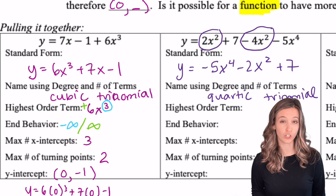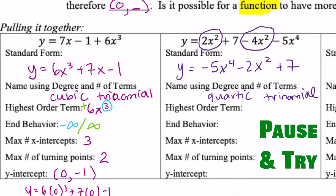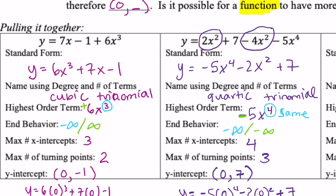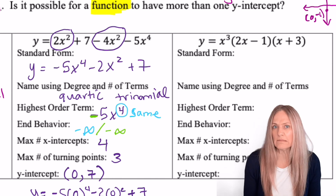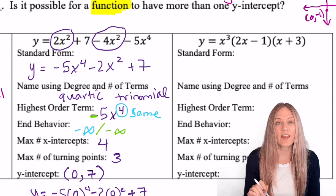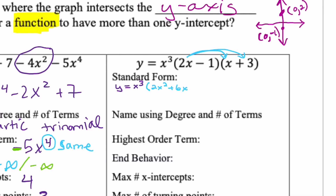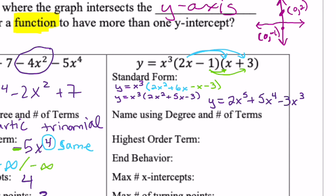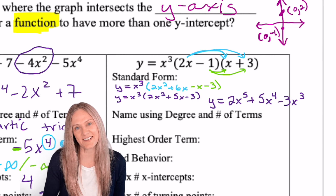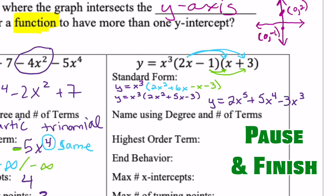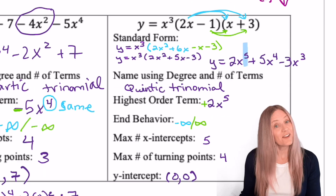Take a moment to try the next one — make sure you start in correct standard form before continuing. Check and see if you got what I got. The next problem is in factored form, so we need to get to standard form. Multiply the binomials first, then once simplified, distribute the monomial throughout. Now that it's in standard form, finish identifying the characteristics and check your answers.